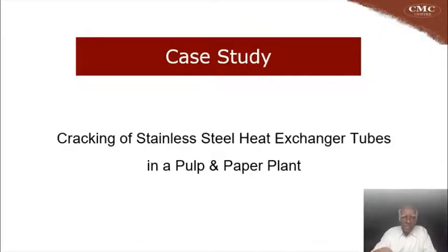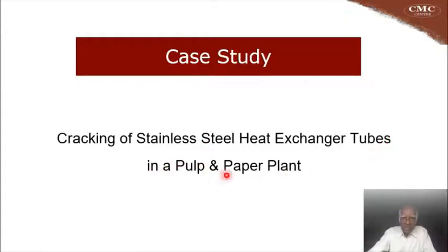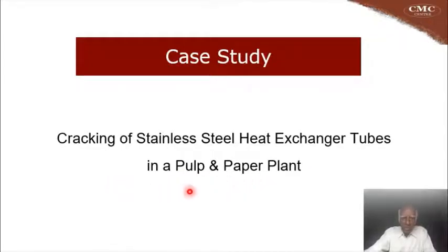In this case study, we will talk about premature cracking of stainless steel heat exchanger tubes in a pulp and paper plant. A pulp and paper plant processes pulp and then from the thickened pulp, papers are produced.